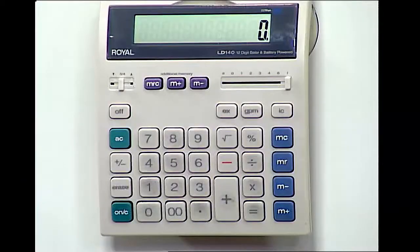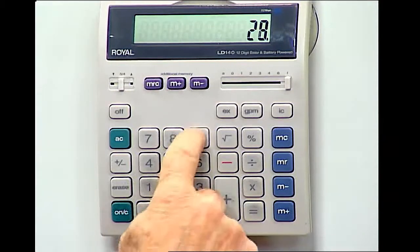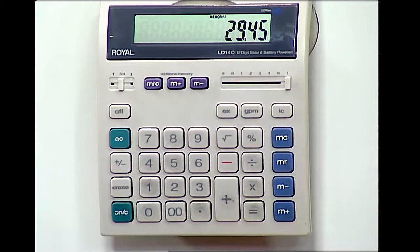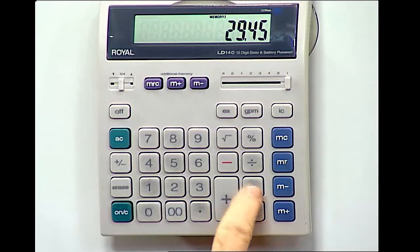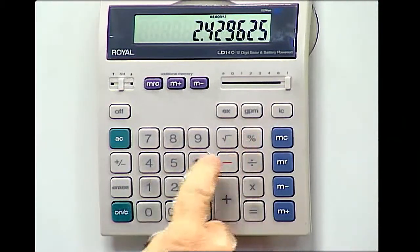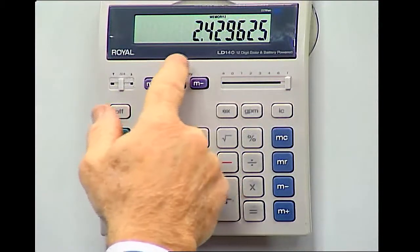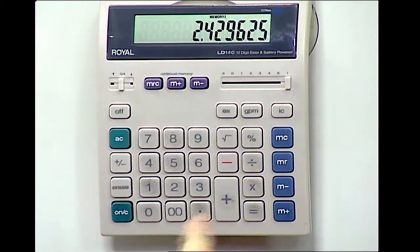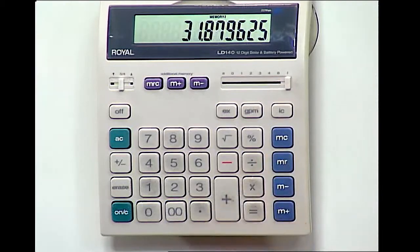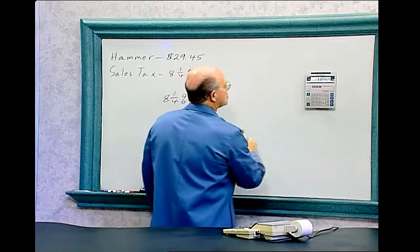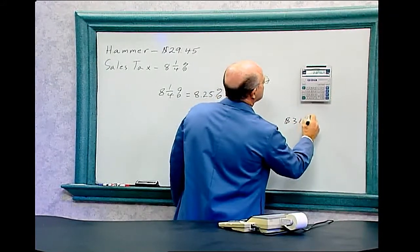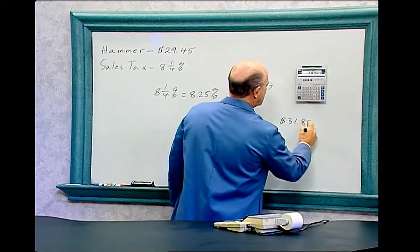So let's go to the calculator. The hammer costs twenty-nine dollars and forty-five cents. We'll put that into memory, memory plus. Now we're going to find out the sales tax. Times eight point two five percent. So that's your sales tax, which is about two dollars and forty-three cents rounded up. So again, hit memory plus. Memory recall. So the hammer cost thirty-one dollars and eighty-eight cents.